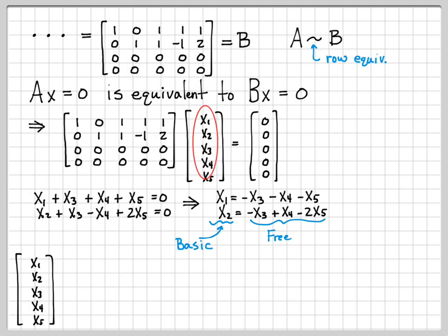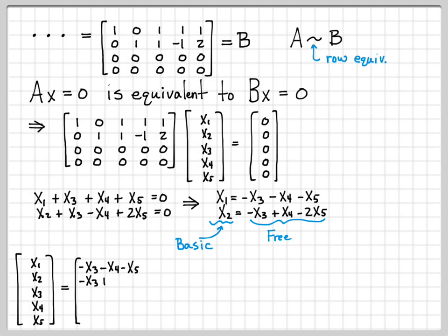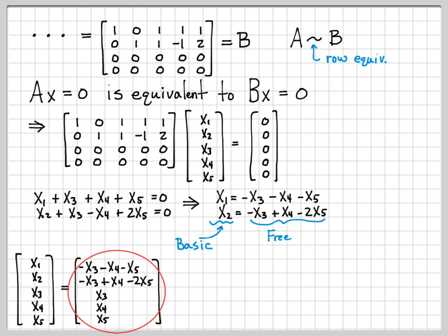The general solution is any vector where x1 = -x3 - x4 - x5, x2 = -x3 + x4 - 2x5, and x3, x4, x5 can be any values. Essentially, pick any values for the free variables, compute what x1 and x2 must be, and that vector is in the null space of matrix A. There is an infinite collection of vectors in the null space, and we now want to find a basis for this infinite collection.